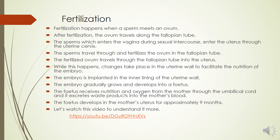Now let's go to fertilization. Fertilization happens when a sperm from a male person meets an ovum from a female person. After fertilization, the ovum travels along the fallopian tube. The sperm which enters the vagina during sexual intercourse enters the uterus through the uterine cervix. The sperms travel through and fertilize the ovum in the fallopian tube. The fertilized ovum then travels back through the fallopian tube into the uterus.